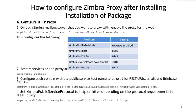You can configure each domain with a public service hostname to be used for REST URLs, email, and briefcase folders. For example, if you have two domains — example1.com and example2.com — you can set public service hostnames on the proxy server. Use ZM Prove modified domain example.com followed by the Zimbra public service hostname attribute and the hostname you want to set. The public service protocol can similarly be set using the Zimbra public service protocol attribute.